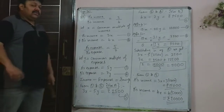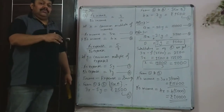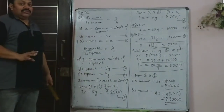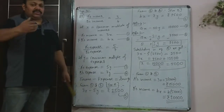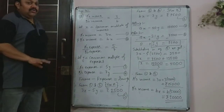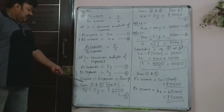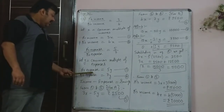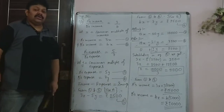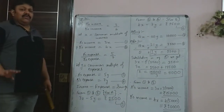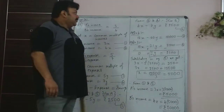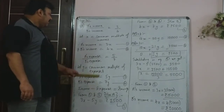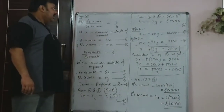Now, what is saving? Income minus expense is saving — that is the basic logic used in this sum, and that is common sense: how much you earn minus how much you spend is what you save. For A: 3x minus 5y equals 2500, since both of them saved rupees 2500. For B: 4x minus 7y equals 2500.